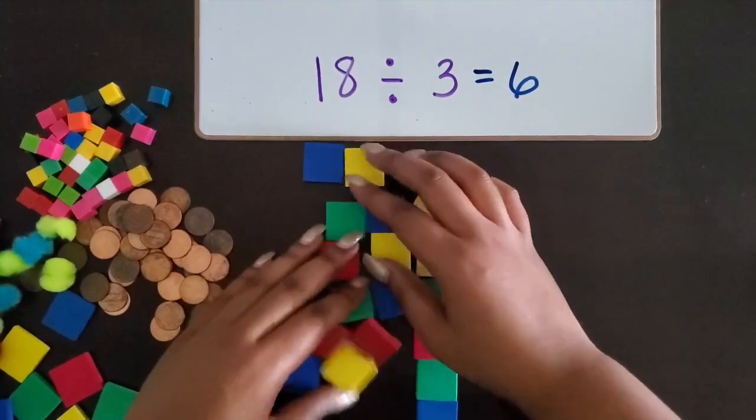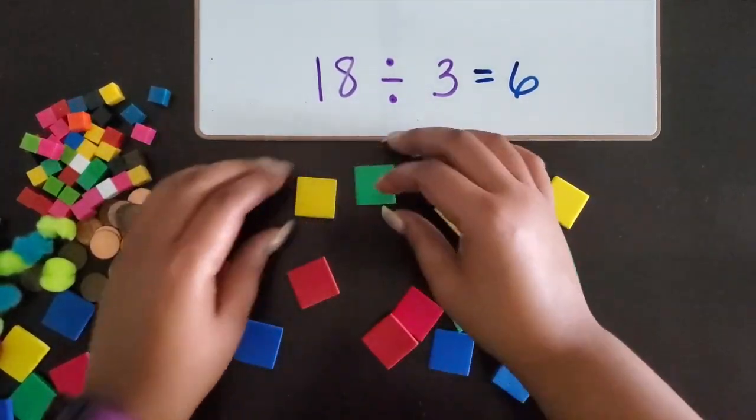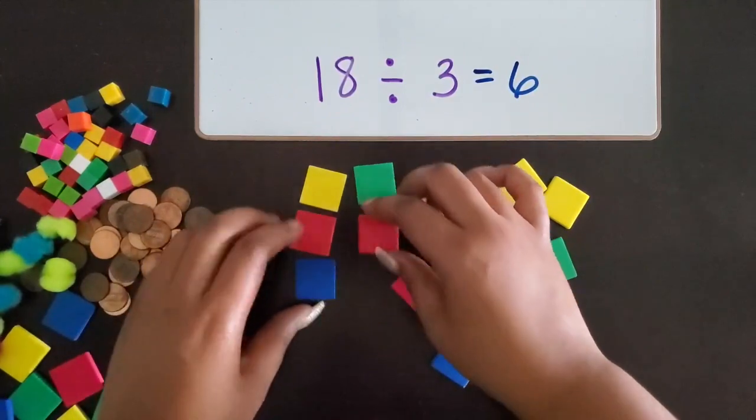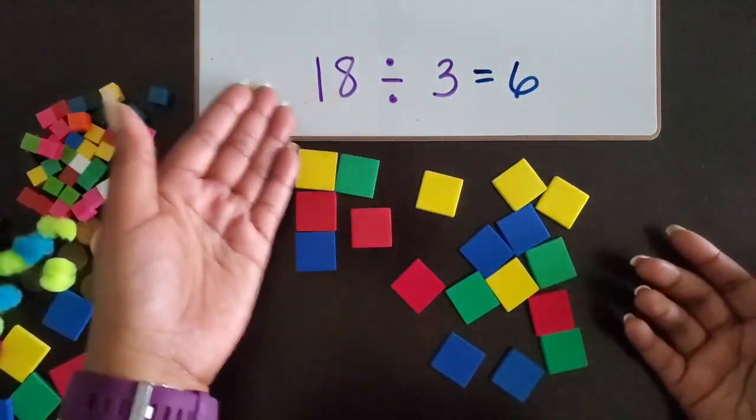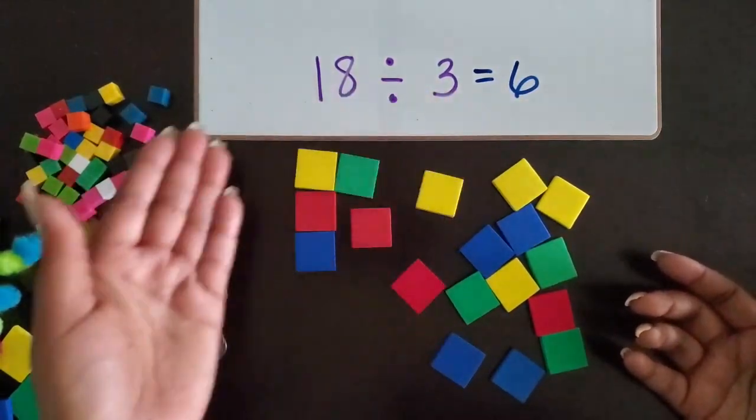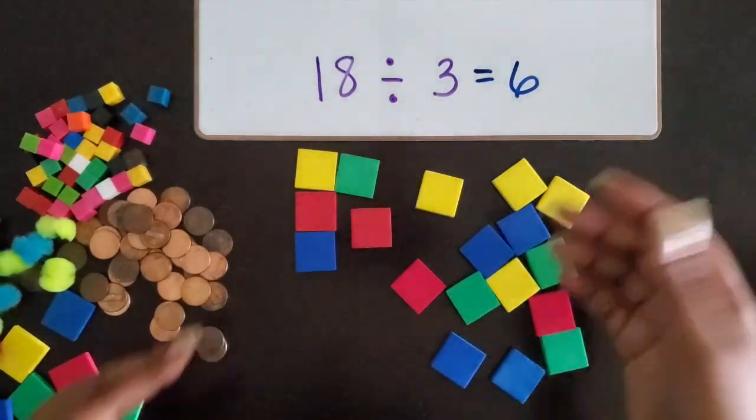So we have 18 here. Let's take the 18 and represent, so if 18 was our total area, three might be the length, so we're trying to find the width.